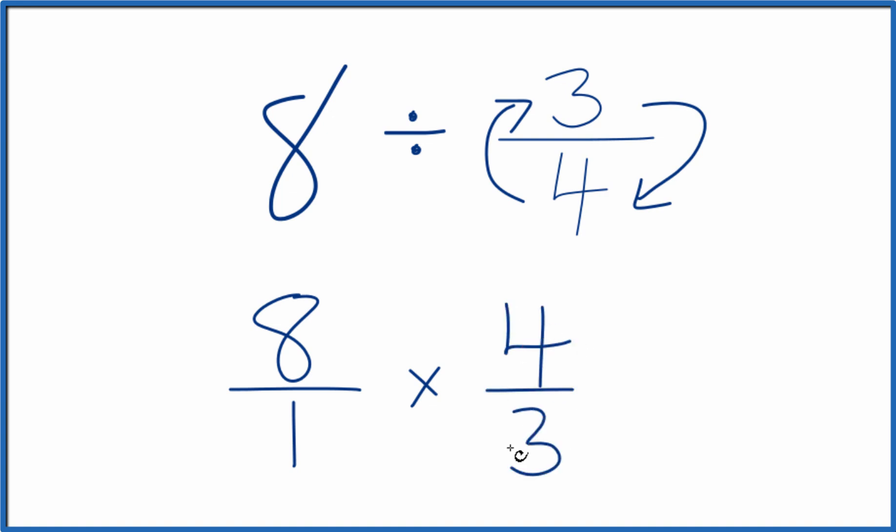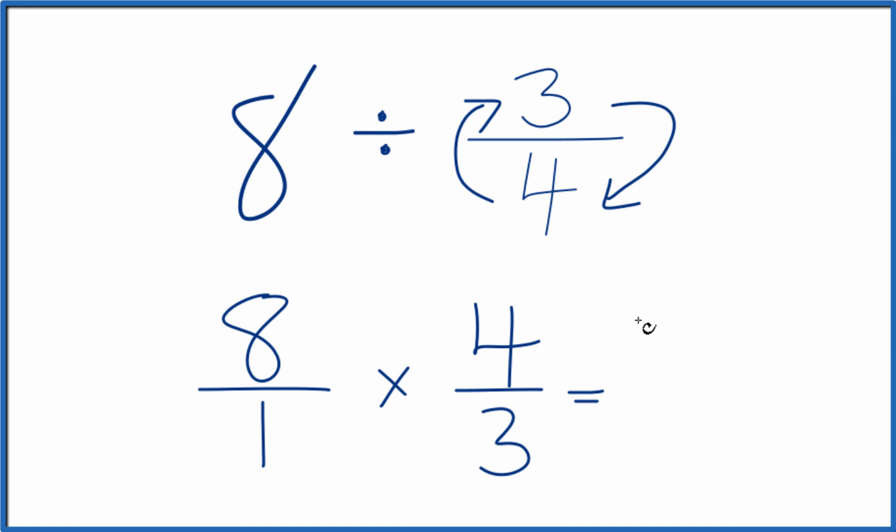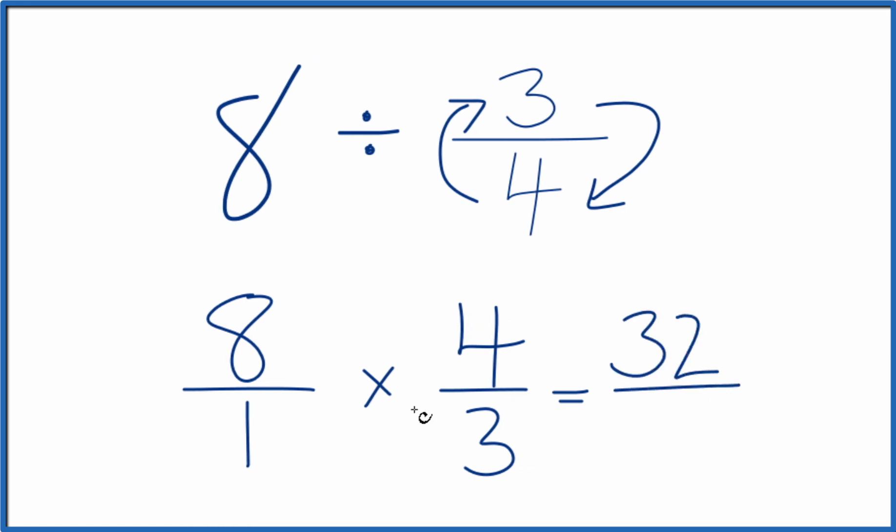Now, when we're multiplying fractions, what we do is we multiply the numerators and then the denominators. So 8 times 4, that's 32. And 1 times 3, that's 3.